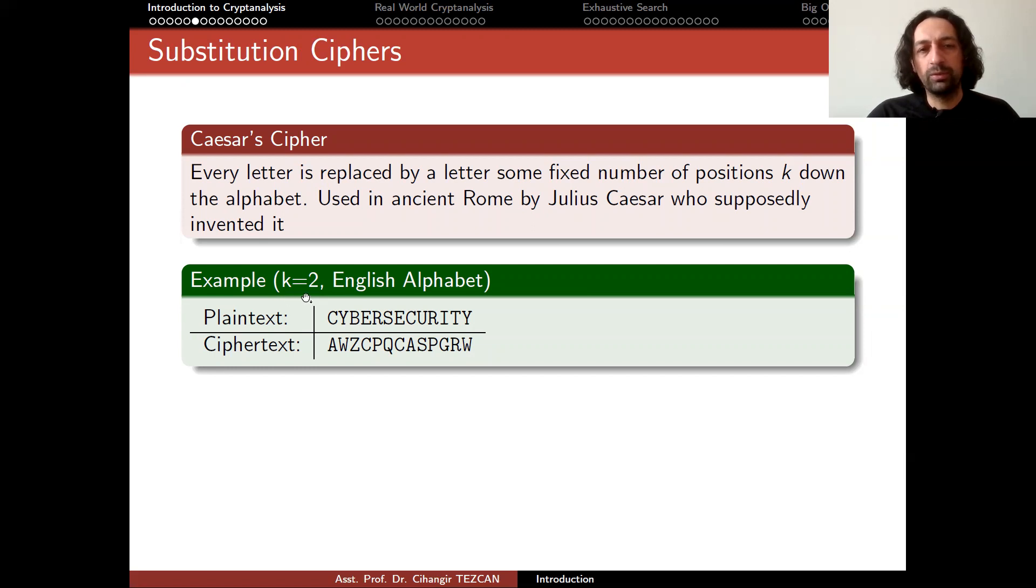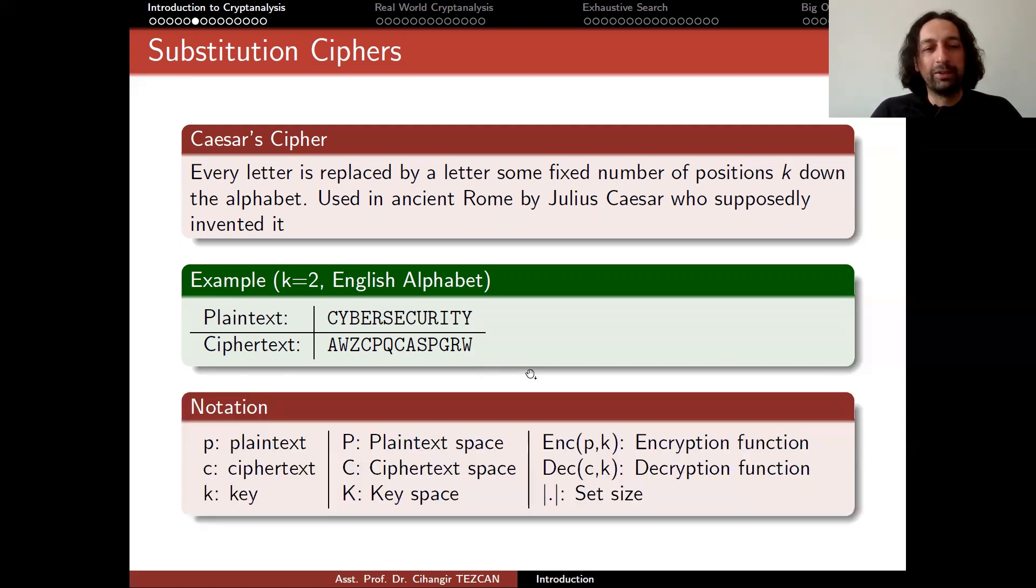As an example, I choose the key as 2 and let's say that we are going to encrypt the plaintext cyber security. In this case, the ciphertext will be as follows because if you look at the English alphabet, c is the third letter. If you go two down, you end up with a. We have to also think this in a circular way because b is the second letter. When you go two down, you will go at the end of the alphabet and write it as z. So it is a very simple method. Any elementary school kids can discover such a method and most probably invented themselves anyway.